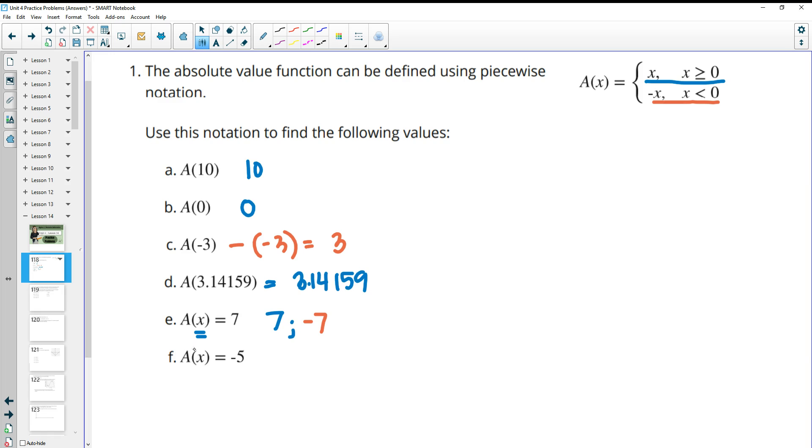And then what could we plug in to kick back negative 5? We couldn't. There's no solutions to this because if we put in 5, we get back 5, and if we put in negative 5, we get back the opposite of negative 5 or positive 5. So there's no solutions to that last part.